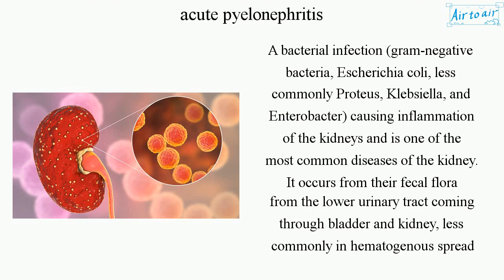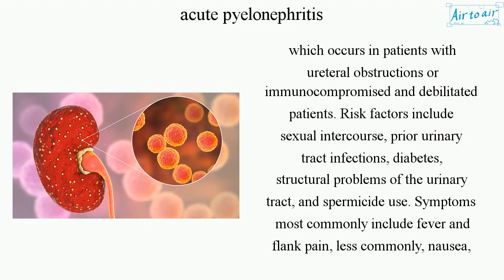It occurs from fecal flora ascending from the lower urinary tract through the bladder and into the kidney. Less commonly, it spreads hematogenously, which occurs in patients with ureteral obstructions or in immunocompromised and debilitated patients.